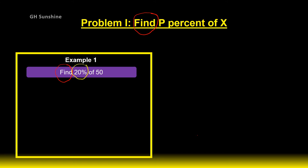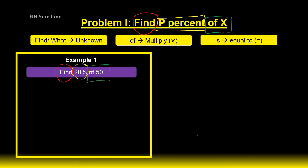To solve basic problems of percentage, you need to remember these three guidelines. First: 'find' or 'what' — that is what you need to find, so substitute the formula with the unknown. Second: the word 'of' means you need to multiply. And last: the word 'is' represents or means equal to.